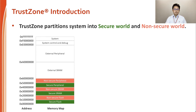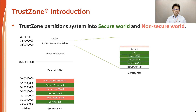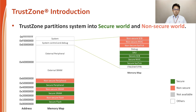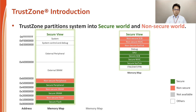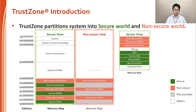TrustZone partitions the memory map into secure and non-secure. Other resources including Flash, SRAM, and peripherals can also be partitioned into secure and non-secure. The secure world can access all resources including Flash, SRAM, peripherals, and system registers. Otherwise, the non-secure world can only access non-secure resources.